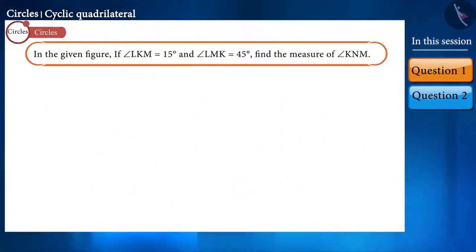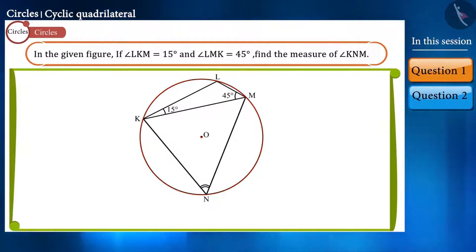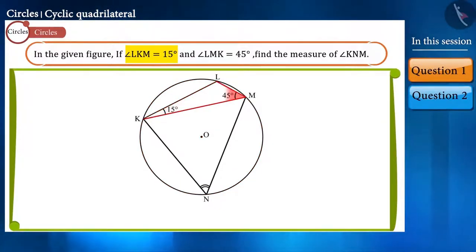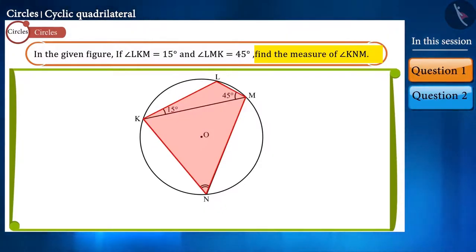Let us start with our first question. In the given figure, the center of the circle is O, angle LKM is equal to 15 degrees, and angle LMK is equal to 45 degrees. Find the value of angle KNM.